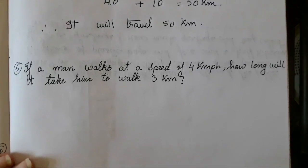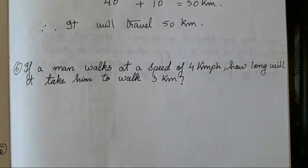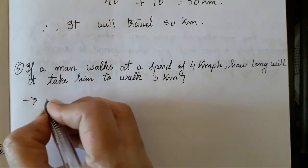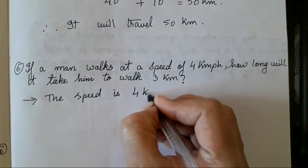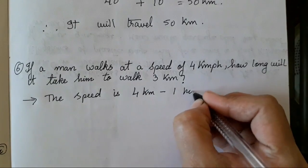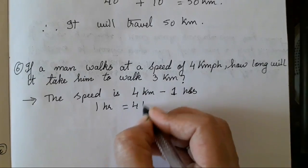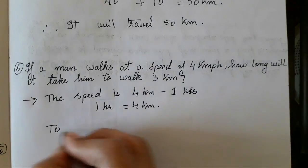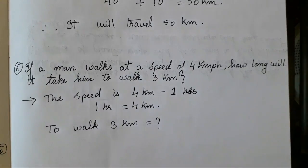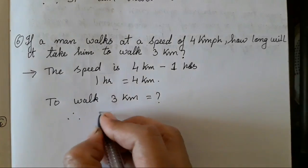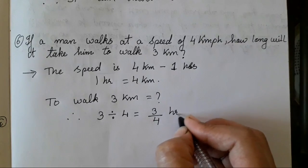Next sum: If a man walks at a speed of 4 km per hour, how long will it take to walk 3 km? The speed is 4 km in 1 hour. To walk 3 km, we calculate: 3 divided by 4, which is three-fourths of an hour.